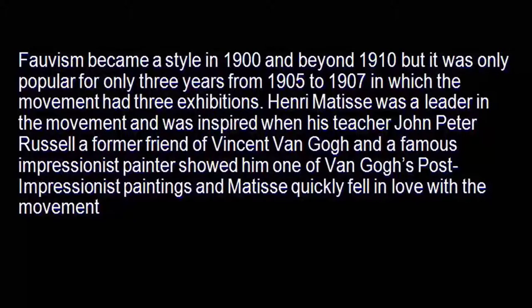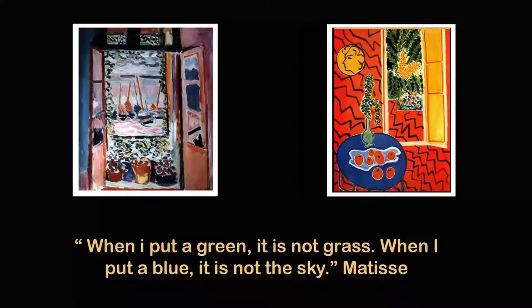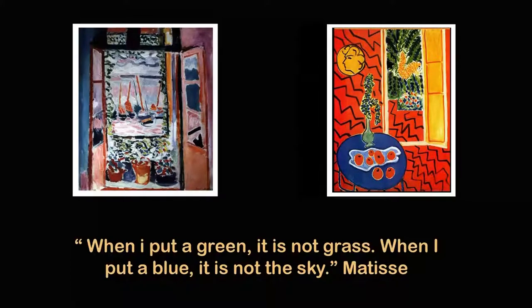Matisse was a leader in that movement and was inspired when his teacher John Victor Russell — a former friend of Van Gogh and a famous indigenous painter — showed him one of Van Gogh's most significant paintings and Matisse quickly fell in love with that movement. Somewhere it was connected to Matisse's love for colour and his conception that it is possible for a painter to allow colour to shape the entire composition. That is why Matisse could say — to quote him — 'When I put a green, it is not grass. When I put a blue, it is not the sky.' So not only is he altering the identical role of the colour, he is providing new meaning, new existence, new significance to the colour in the context of a painting.